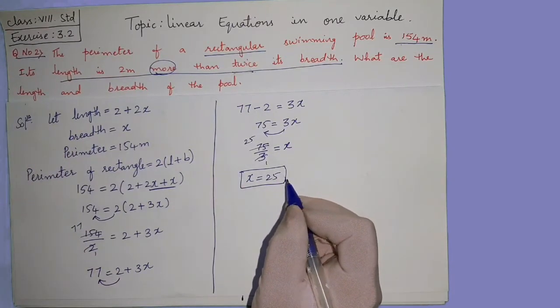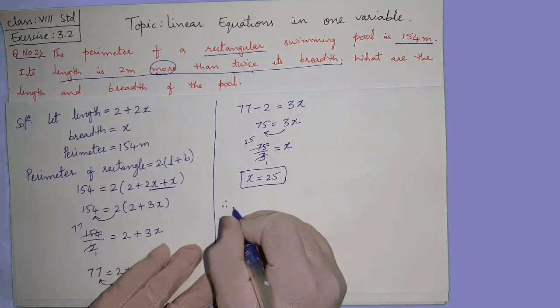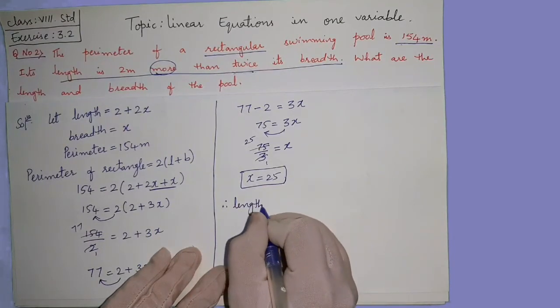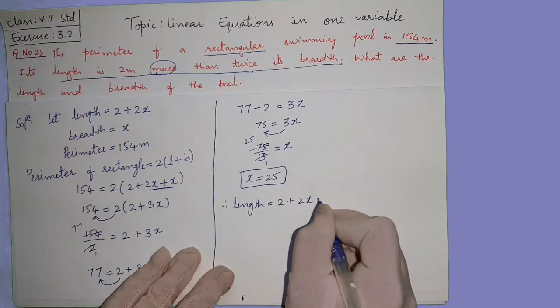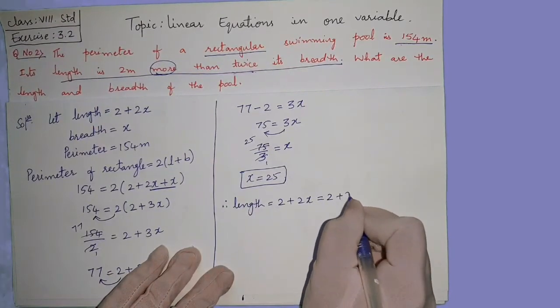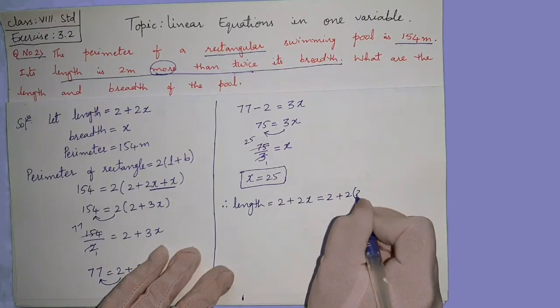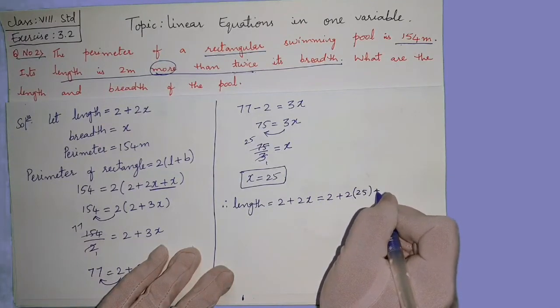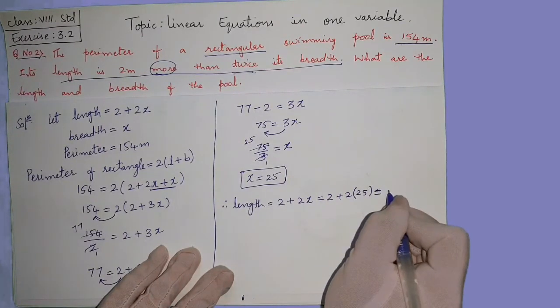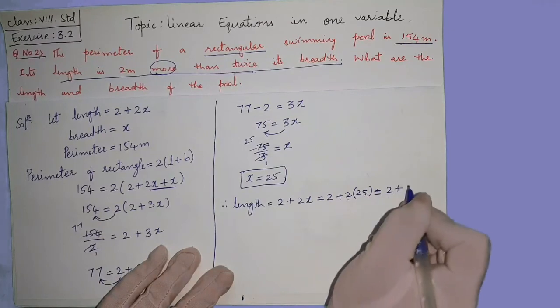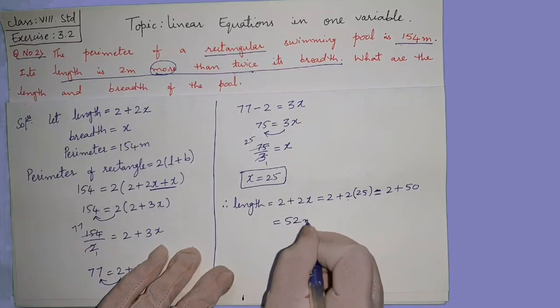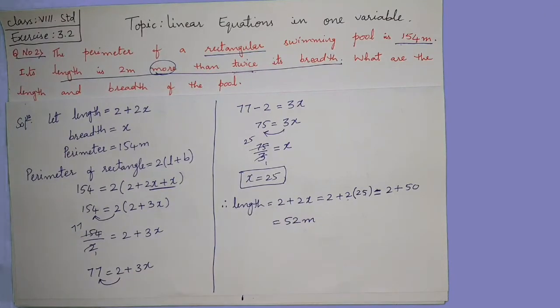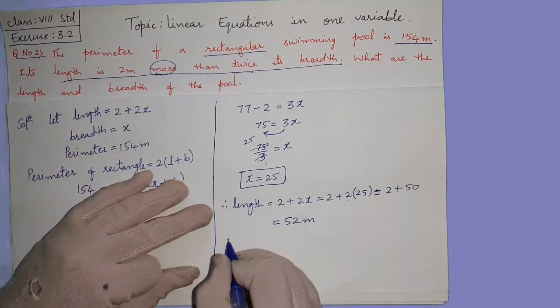Therefore length will be equals to, it is 2 plus 2x. So 2 as it is plus 2 as it is, x ke place phe 25. Then equals to 2 plus 2 into 25, 50. So your length will be equals to 52 meters. The unit you have to use is meters.